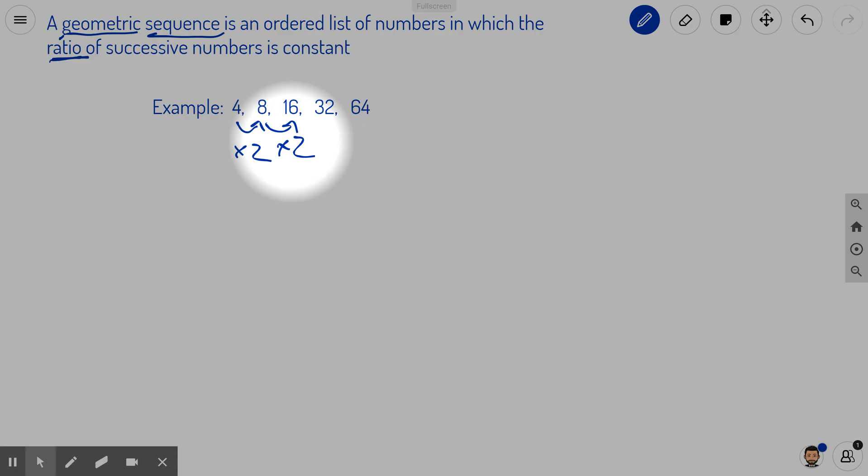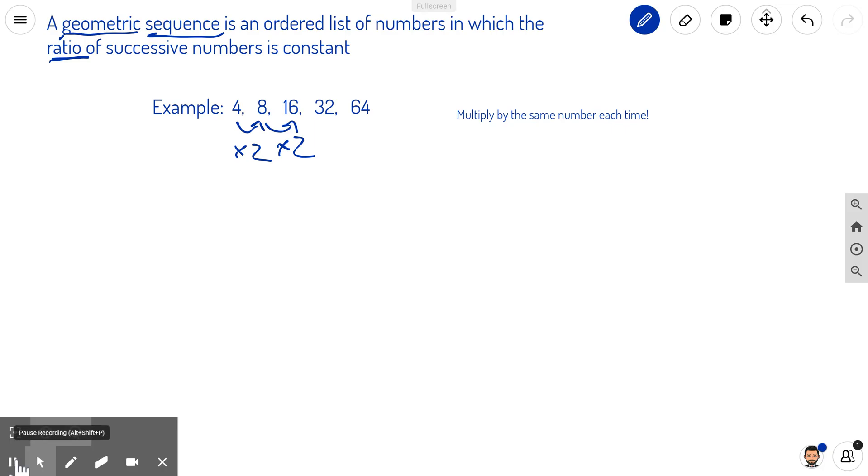And it continues just like that, as long as you're putting them together. Another way to say this is that we're actually multiplying by the same number each time. So we're repeatedly multiplying by the same number.